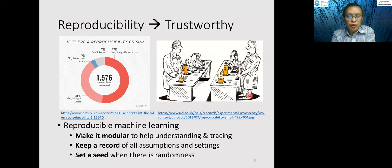And in terms of machine learning, to be reproducible, there are three key considerations. Firstly, is to make it modular. This can help understanding and the tracing of the machine learning algorithms. That's why we prefer a pipeline-based API in the development of machine learning algorithms. Second, it's important to keep a record of all the assumptions that you have made and the settings in designing your programs.